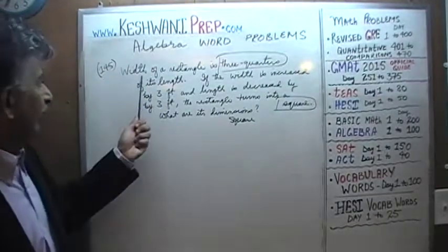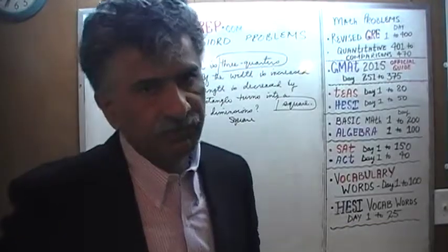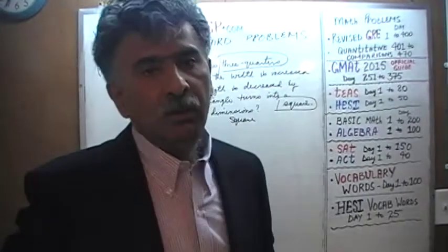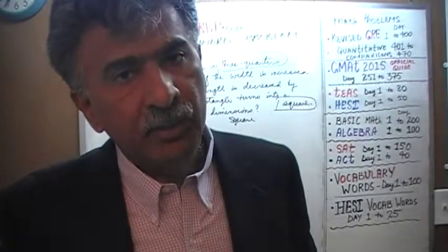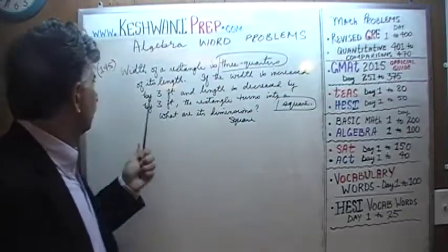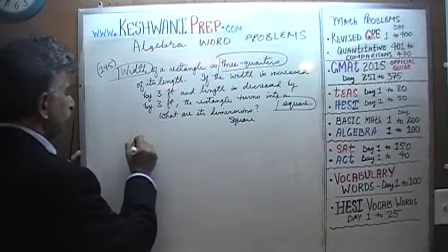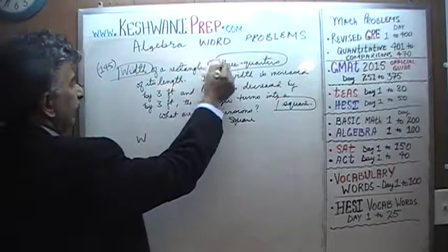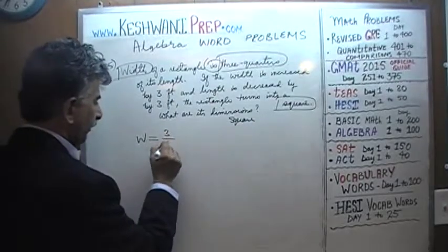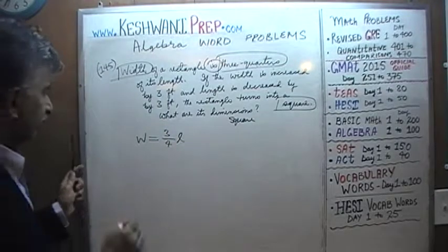We have two sentences here. The width of the rectangle is 3 quarters of the length — that's our first sentence, from which we'll get the first equation. We'll have a second sentence from which we'll get the second equation. We have two independent equations and two unknowns: the length and the width. So the width W equals 3 quarters of the length L. That's our first equation.